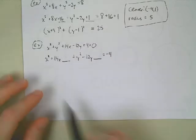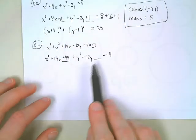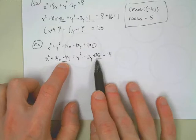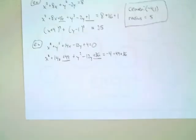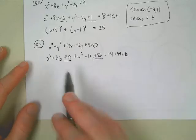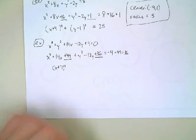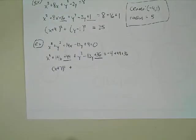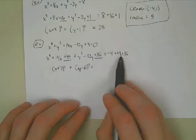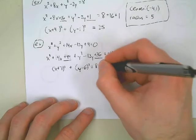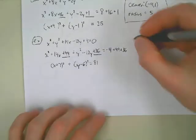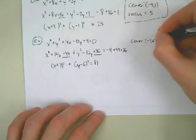To complete the square for x: plus 49. For y: plus 36. We add 49 and 36 to both sides. x squared plus 14x plus 49 factors to x plus 7 quantity squared. y squared minus 12y plus 36 factors to y minus 6 quantity squared. Combining on the right: negative 4 plus 49 plus 36 equals 81. So the center is negative 7, 6, and the radius is 9.